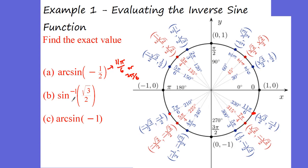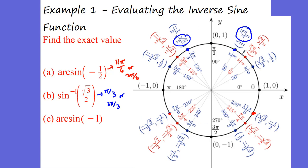Let's take a look at the next one: sine to the negative 1, which is the same as arcsine, equals positive root 3 over 2. Where is sine equal to root 3 over 2? Right there at π over 3 and also at 2π over 3 — those are both answers. Sine values correspond in the first and second quadrant or third and fourth quadrant because we're dealing with the vertical. For arcsine of negative 1, there's only one angle — that is 3π over 2.